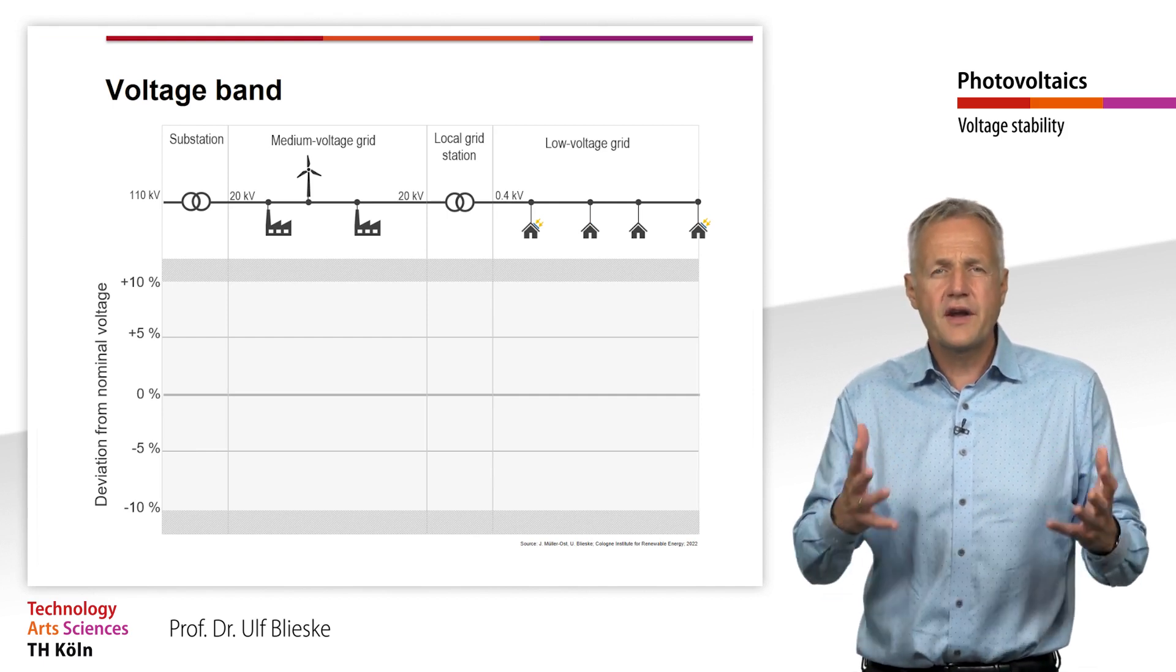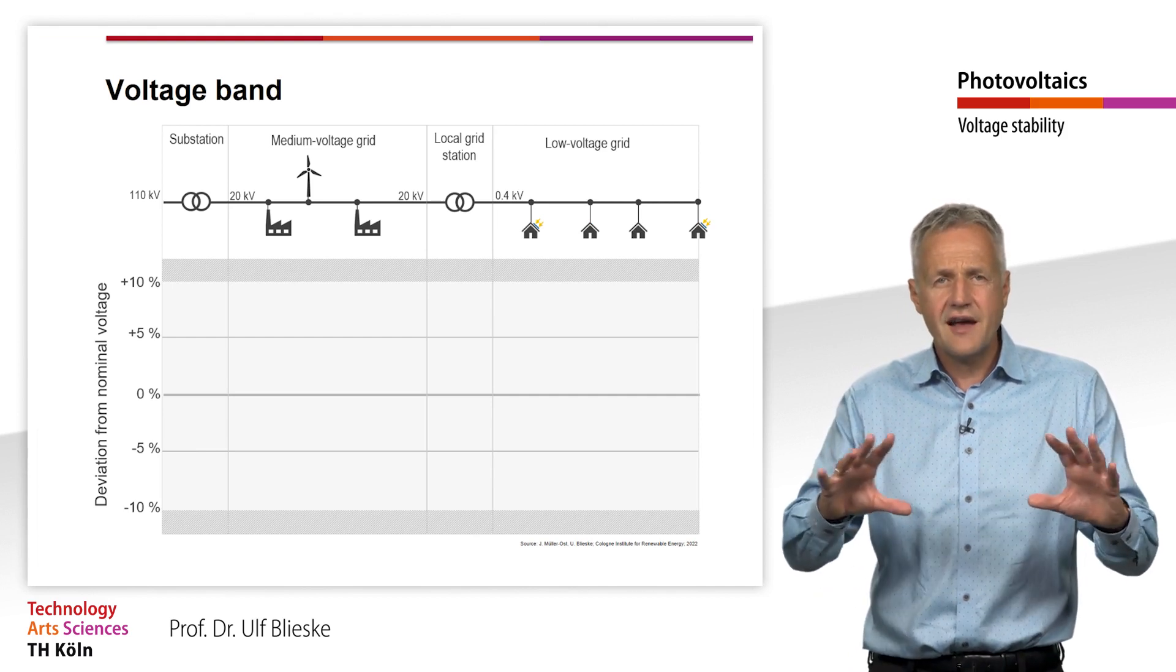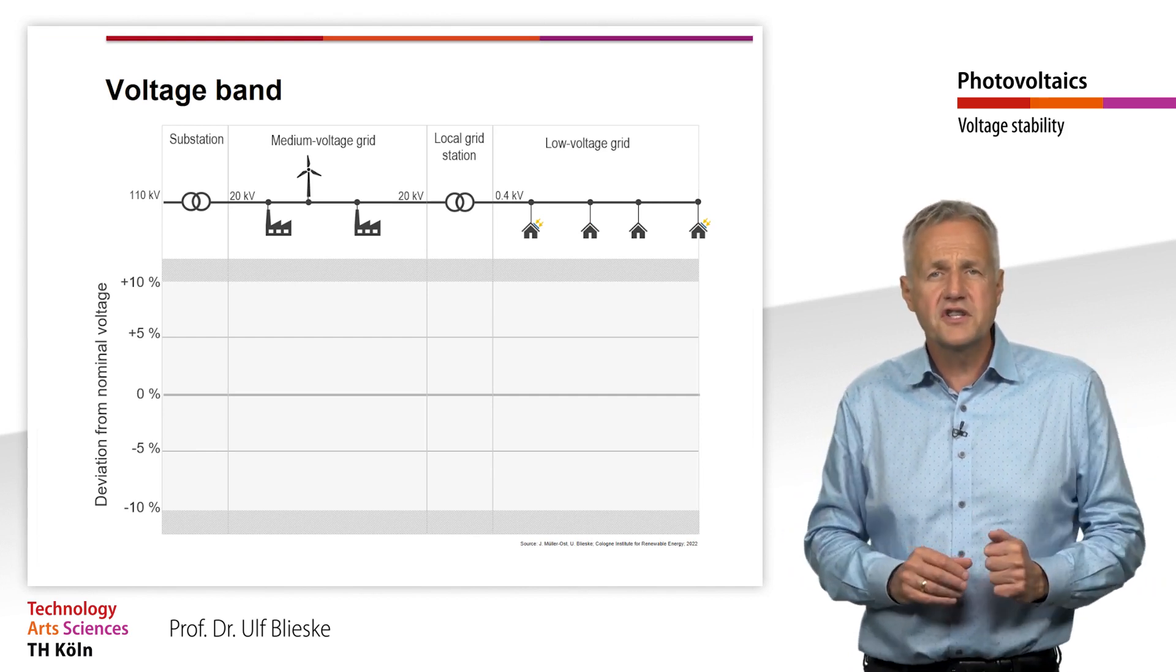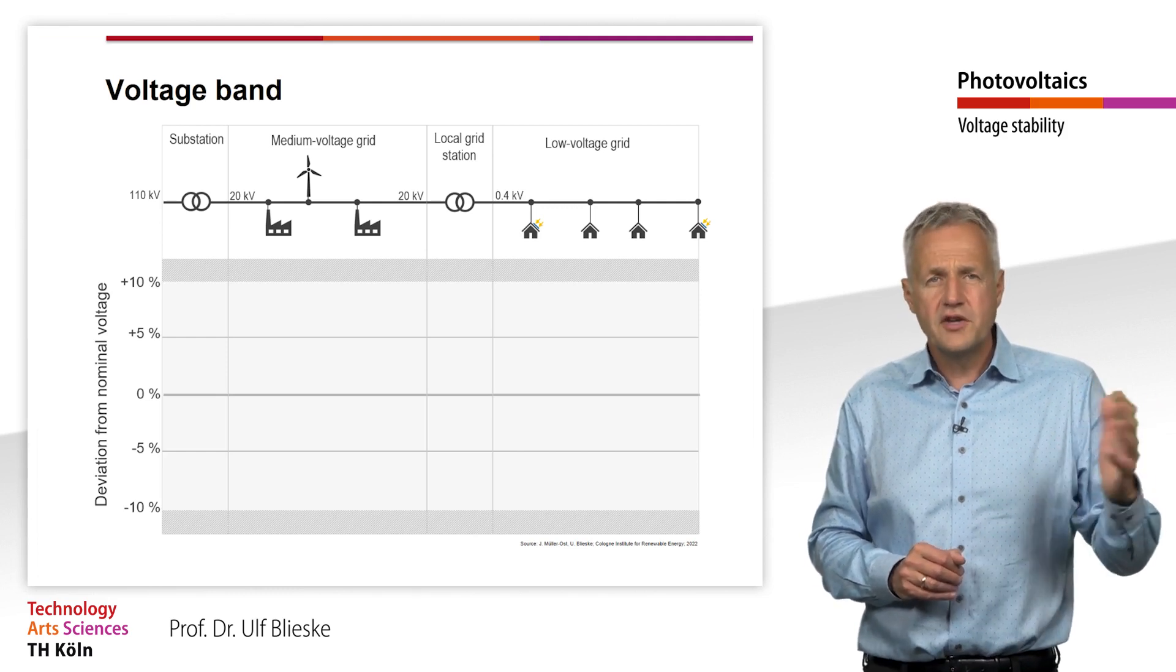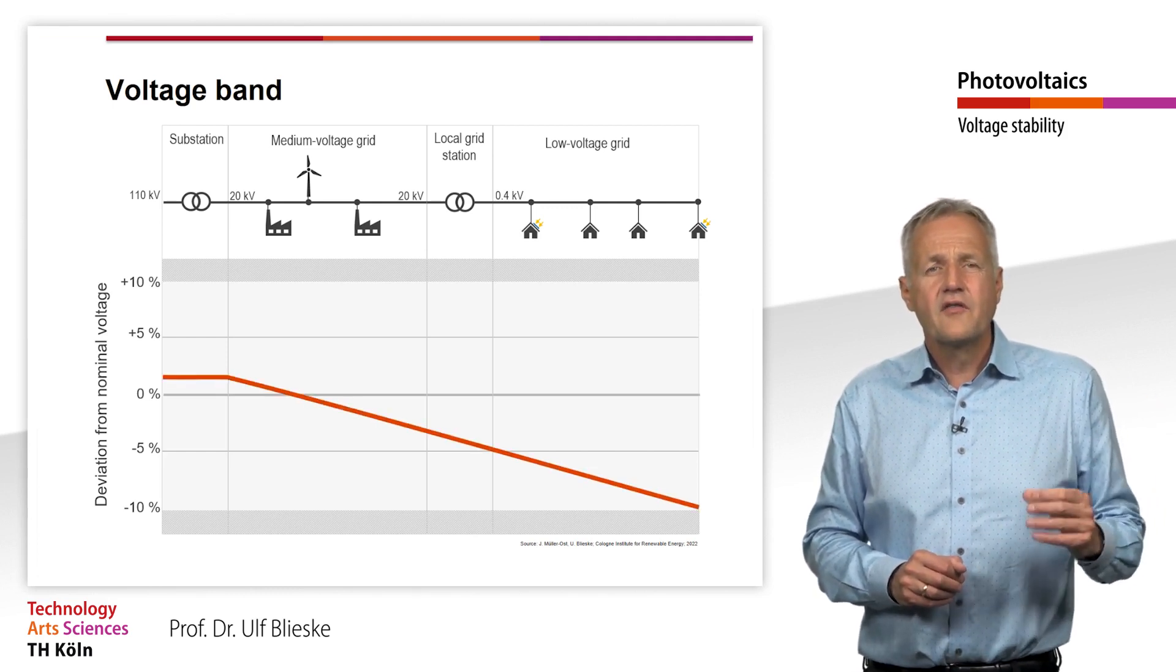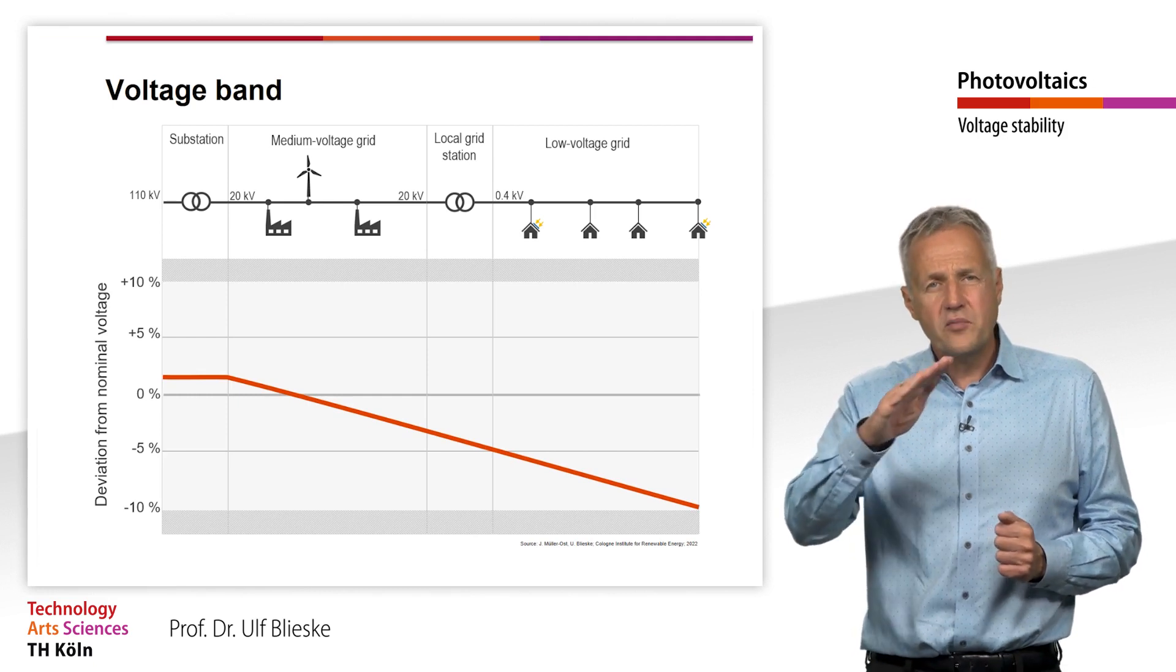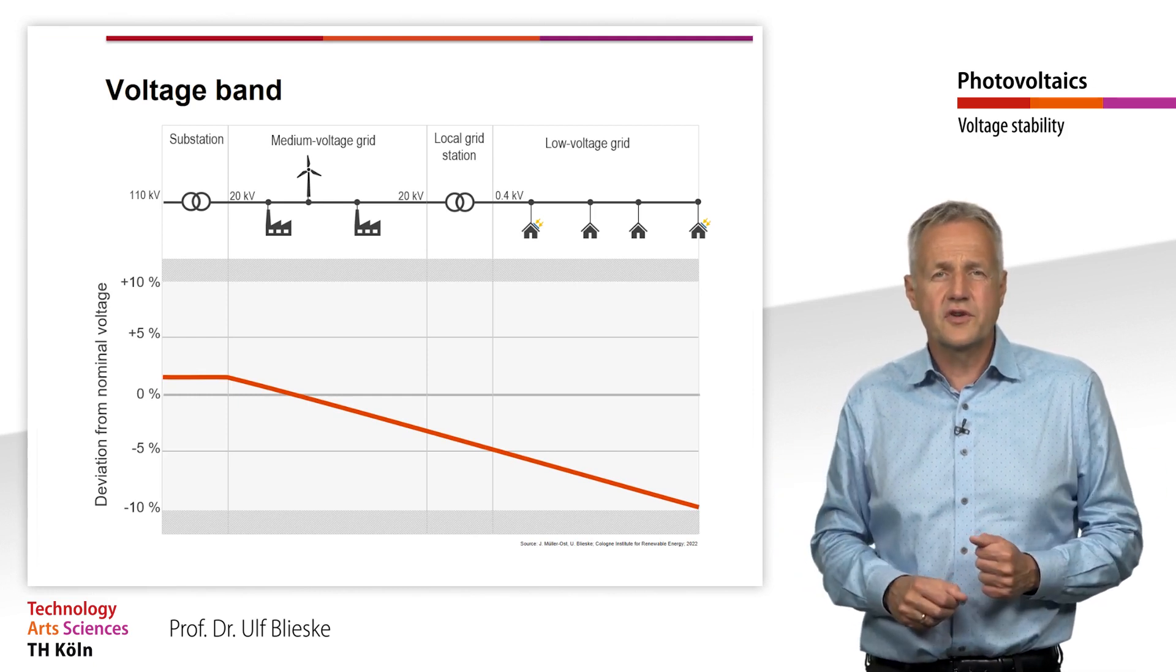Often, the grid operator sets a voltage slightly above the nominal voltage at the substation upstream of the medium voltage grid. From here, the power must be transported via more or less long lines to the consumers.